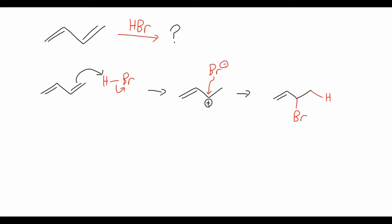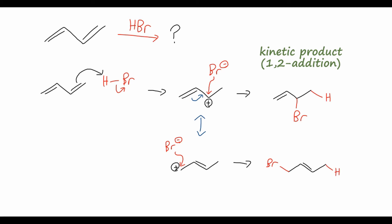If we go back to this intermediate carbocation, we notice it is an allylic carbocation, which can be delocalized. The pair of electrons from the terminal alkene can come over to form a double bond between those two carbons, leaving the positive charge on the primary carbocation. The bromide anion can then attack the primary carbocation, giving us another product where the bromine is on the primary carbon and the double bond has shifted to be between carbons two and three instead of terminally. The first product — with no rearrangement of the double bond — is called the kinetic product, or 1,2-addition, because the hydrogen and bromine have added along carbons 1 and 2.